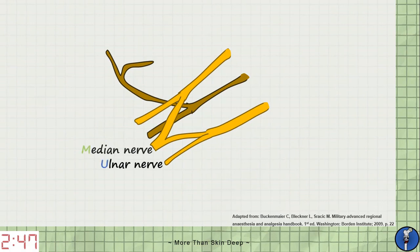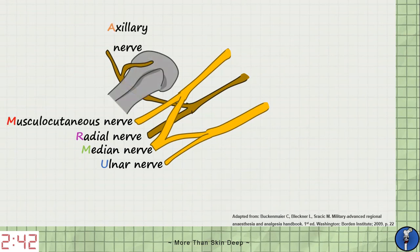They are the ulnar, median, radial, musculocutaneous and axillary nerves. We'll cover each of these in a lot more detail later on in this series, but for now let's just make sure we remember their names and origins.